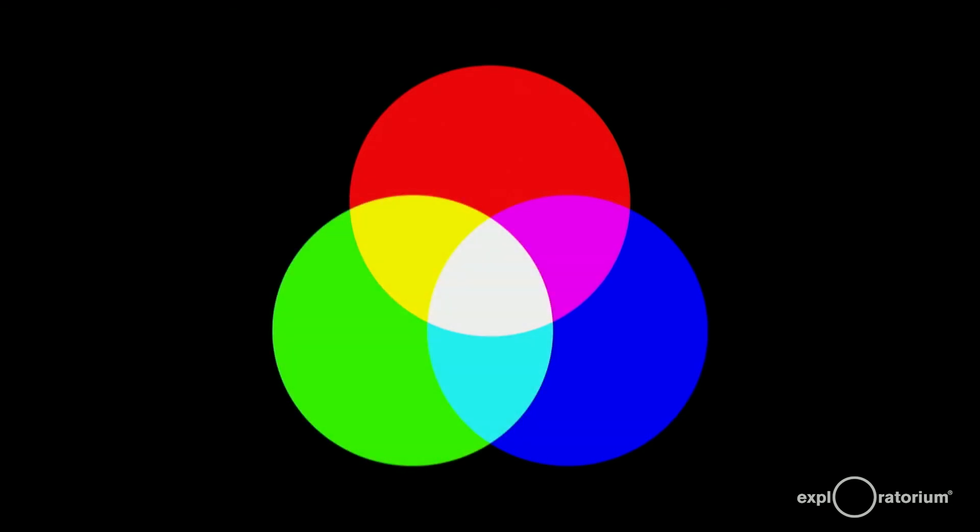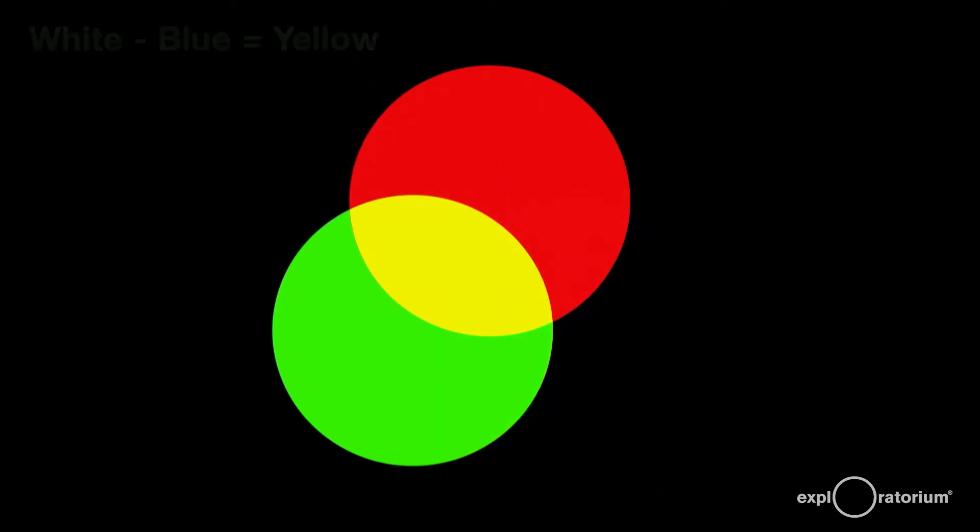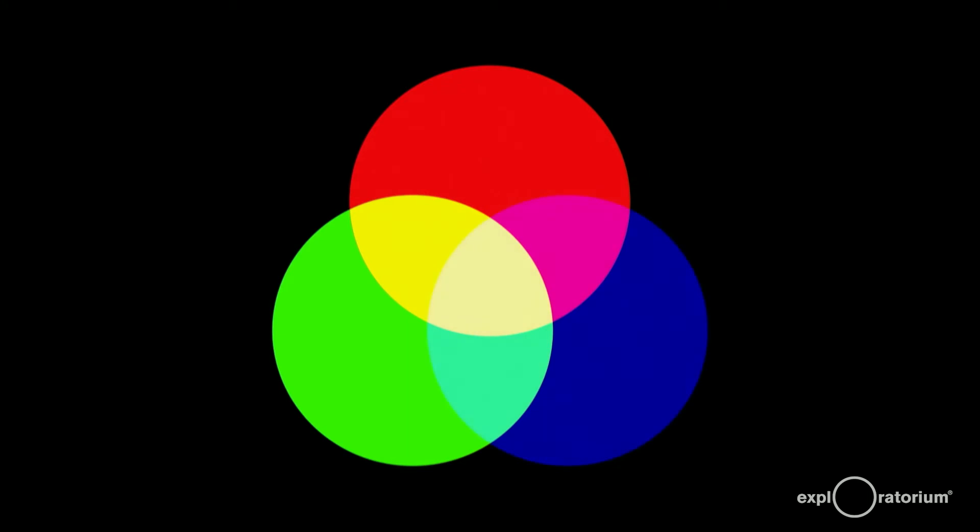And just to complete the set, if you take blue from white light, you're left with blue's complement, yellow. This idea of taking away colors will lead us nicely to subtractive color mixing.